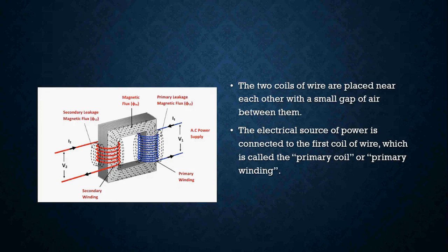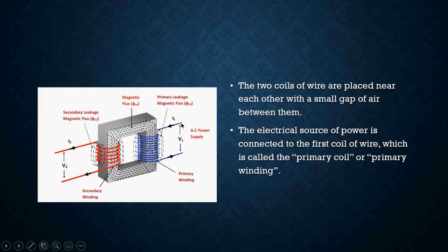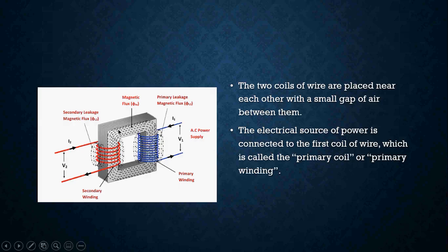The electrical source of power is connected to the first coil of wire, and that's going to be called our primary coil or primary winding. The blue winding here could represent our primary winding — this would be the electrical power supply coming into the transformer. We have our iron core, and as we apply electricity to this coil of wire, we are now generating a magnetic field. It is that magnetic field that will create what we call a magnetic flux through our iron core, which will transfer that to our secondary winding.